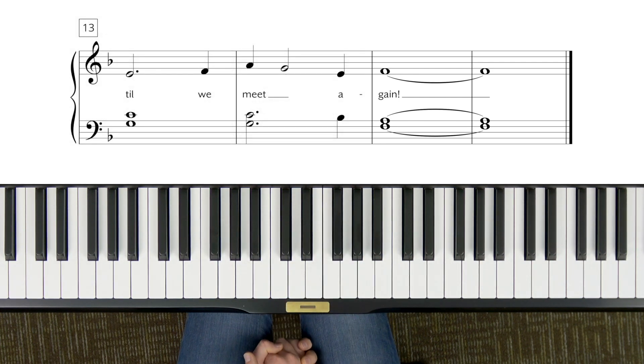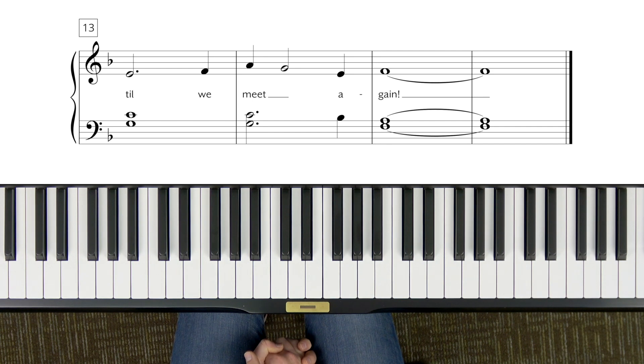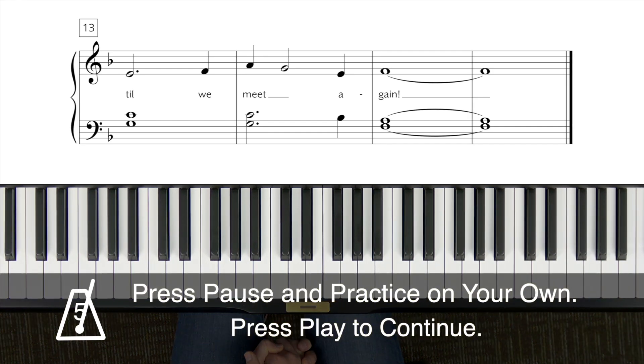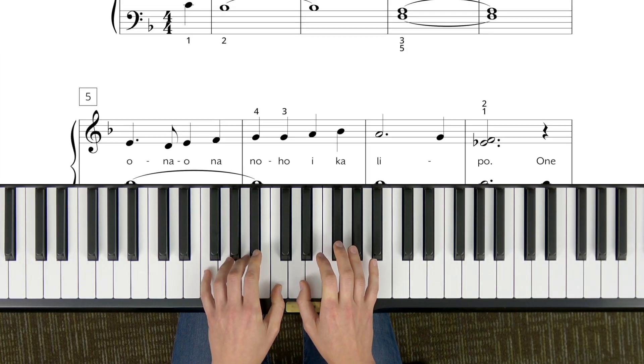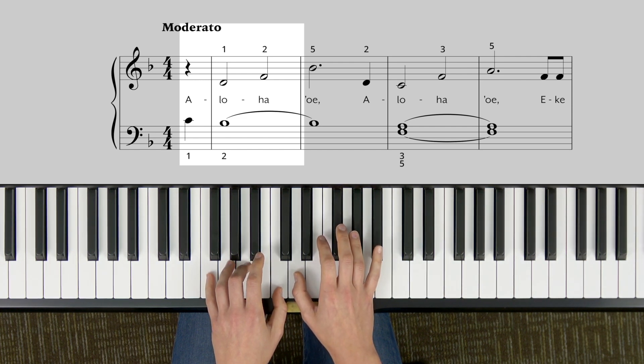All right, practice that second half on your own as many times as you need. Then we're going to go back to the beginning. Okay, going back to the beginning. Left hand is in F position, right hand thumb on D, pinky on B flat. I've said it many times. I'm going to count to three, we'll come in on four together.